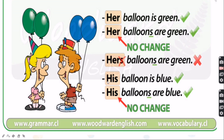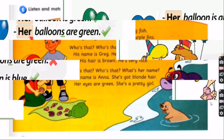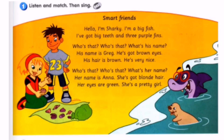His balloon is blue — how many balloons? No S, so just one. His balloon is blue. If there is an S — his balloons — that means two. His balloons are blue. Remember: 'he' is for male, 'her' is for female.